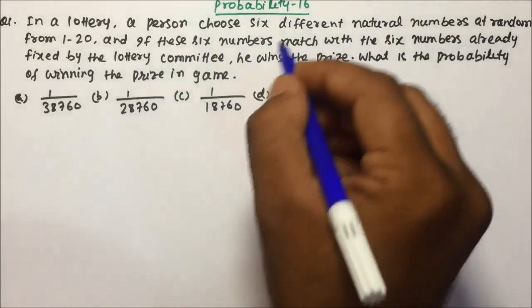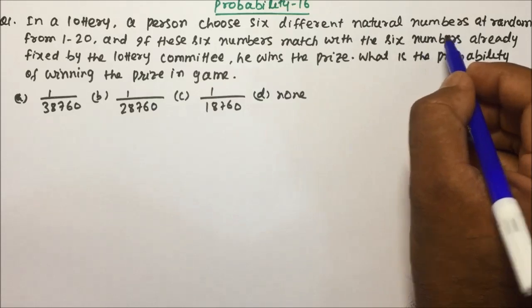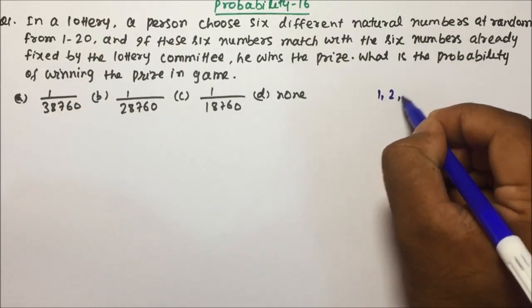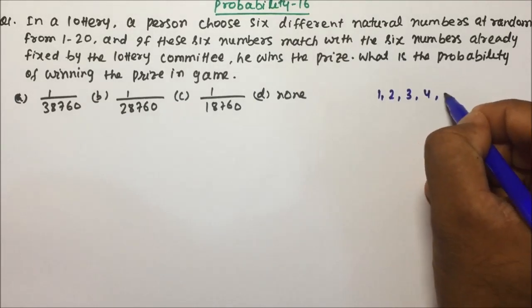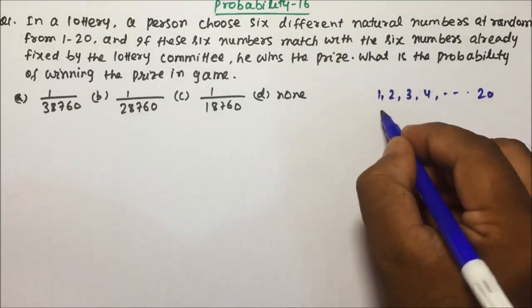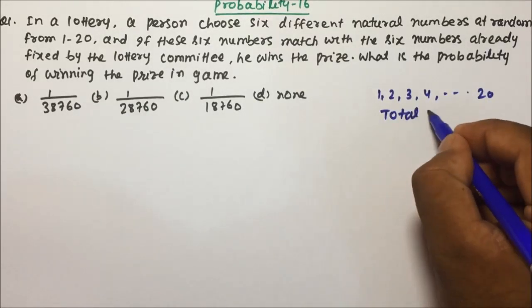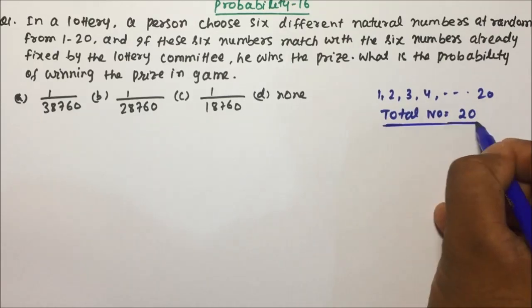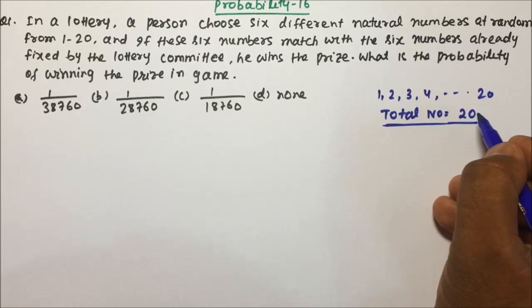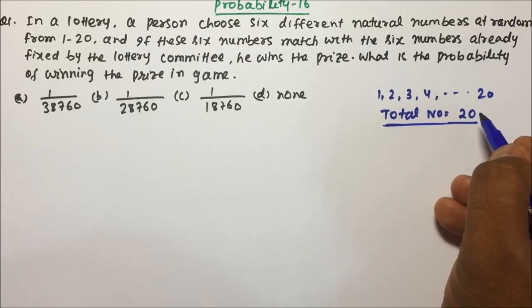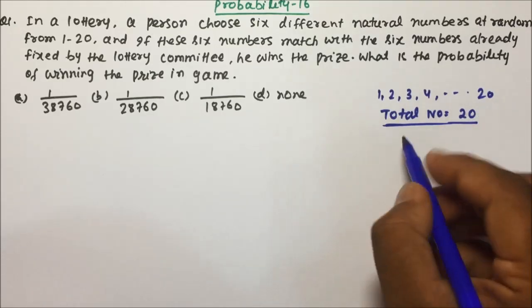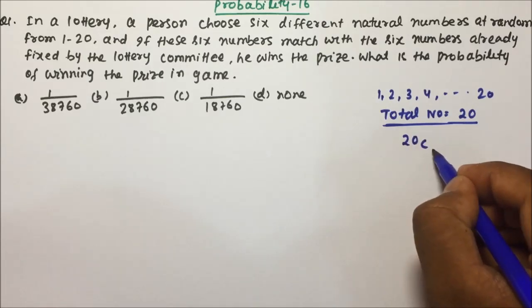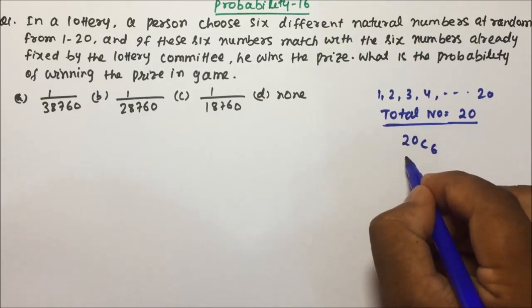In a lottery, a person chooses six different natural numbers at random from 1 to 20. So suppose we have numbers from 1 to 20: 1, 2, 3, 4 and till 20. Total numbers are 20. Now, a person is going to choose six different natural numbers, so if you want to choose six different numbers from 20 then it will become 20C6.